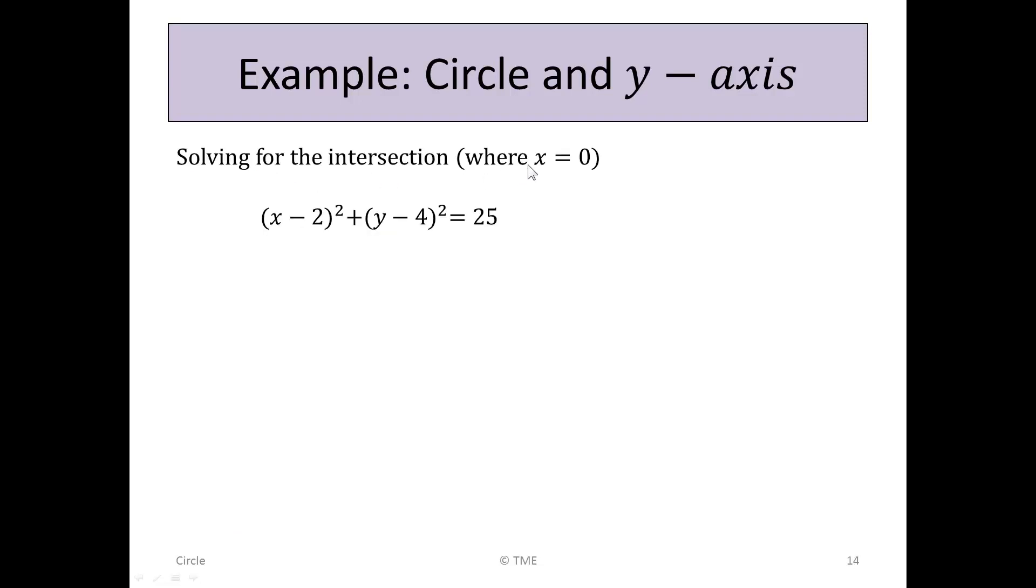So solving for the intersection when x is 0, we say (x - 2)² + (y - 4)² = 25, and instead of x we substitute the value 0. So we now have (0 - 2)² + (y - 4)² = 25. Doing the algebra, -2 squared gives us 4, so 4 + (y - 4)² = 25. Taking the 4 to the other side, we get (y - 4)² = 21.